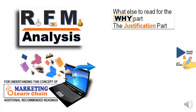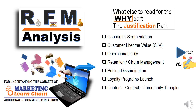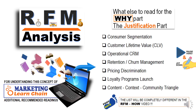As usual for the Marketing Learn Chain video series, here are additional recommended readings for RFM: understand consumer segmentation, understand customer lifetime value and its mathematical calculations, understand operational CRM. When we look at the how part, we will cover analytical CRM, churn and retention management, pricing discrimination, loyalty programs, the classic triangle of content, context, and community, and more. The reading list will be completely different when we come to the RFM how video.